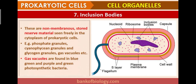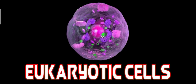The seventh organelle is inclusion bodies — non-membranous stored reserve materials seen freely in the cytoplasm of prokaryotic cells. Examples include phosphate granules, cyanophycean granules, glycogen granules, and gas vacuoles. Gas vacuoles are found in blue-green, purple, and green photosynthetic bacteria.